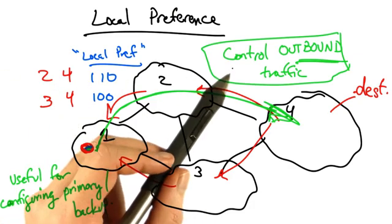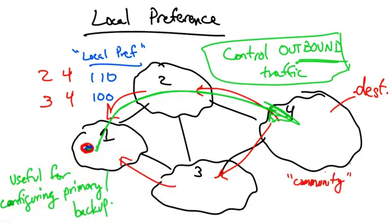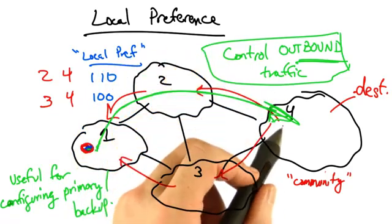Now typically, as I mentioned, local preference is used to control outbound traffic. But sometimes autonomous systems can attach what's called a BGP community to a route to affect how a neighboring autonomous system sets local preference. A community is nothing more than a fancy jargon word for a tag on a route.